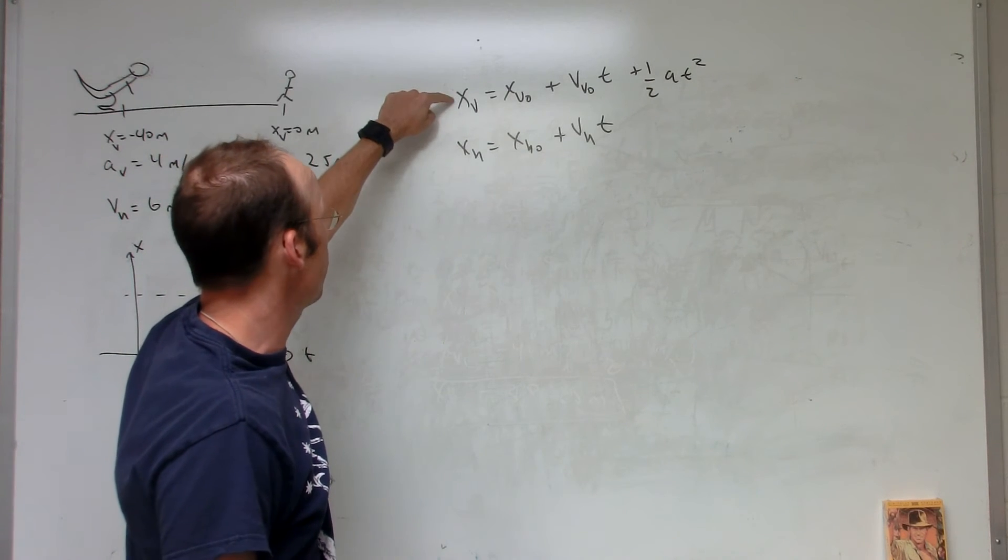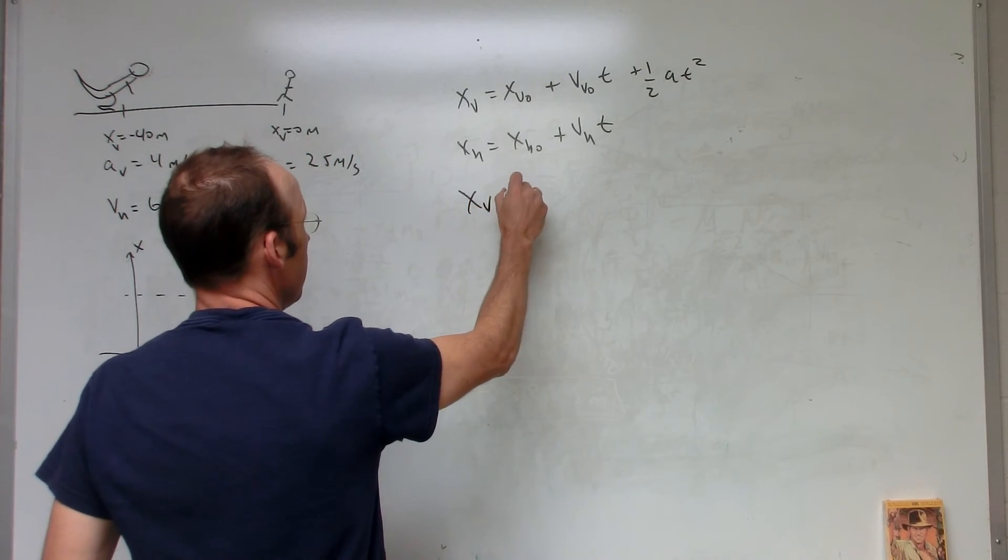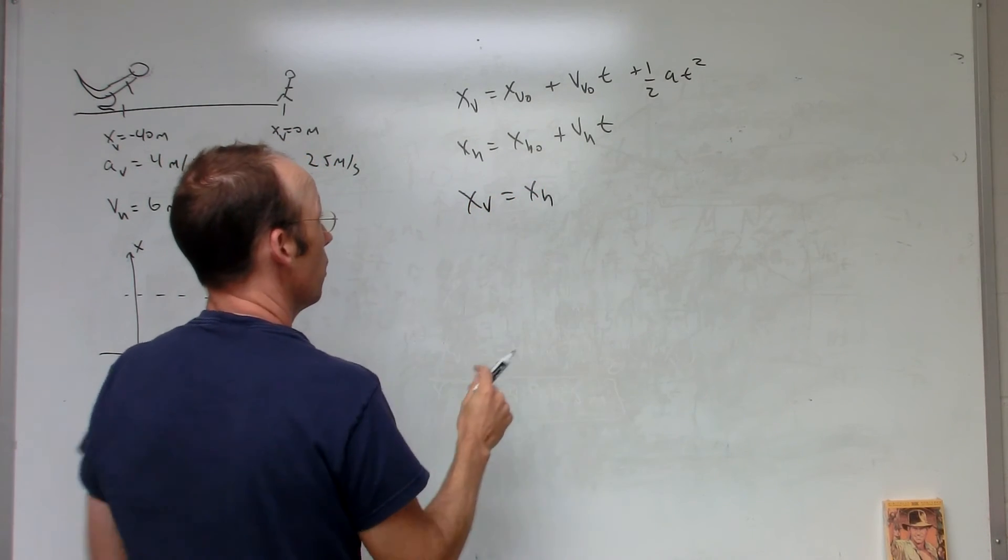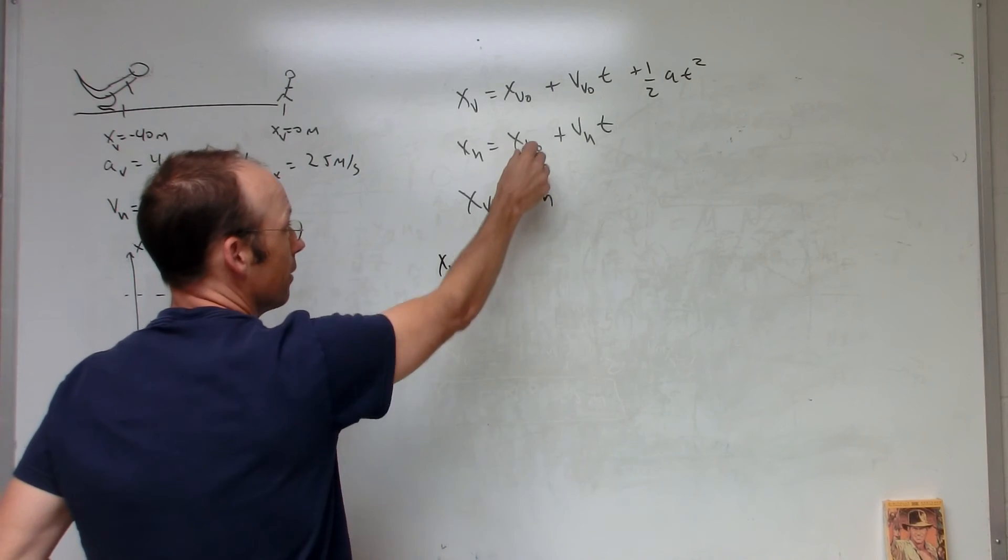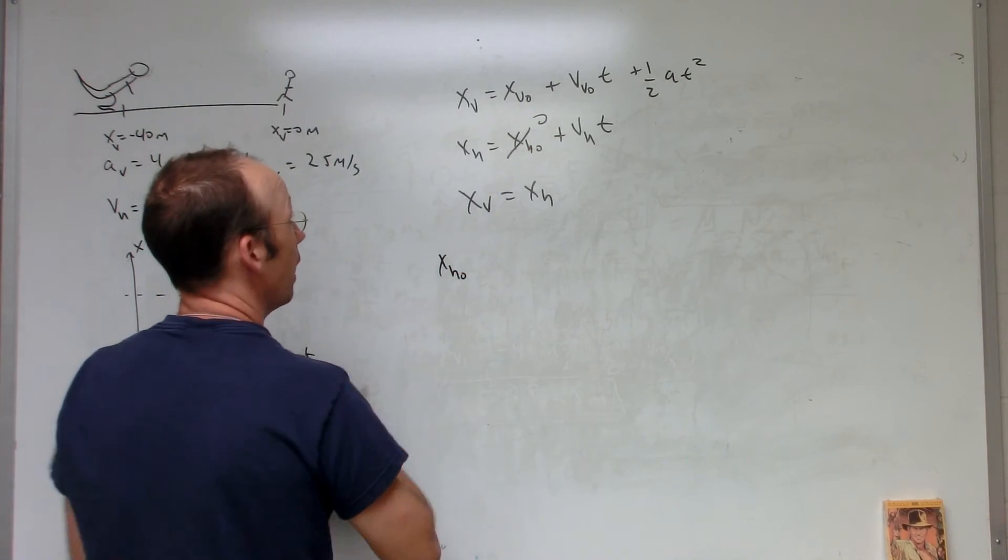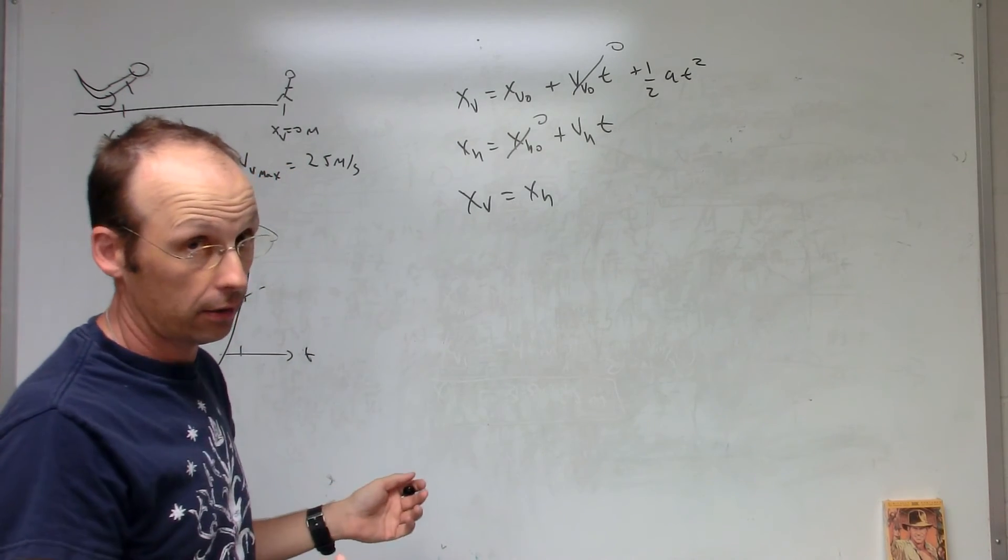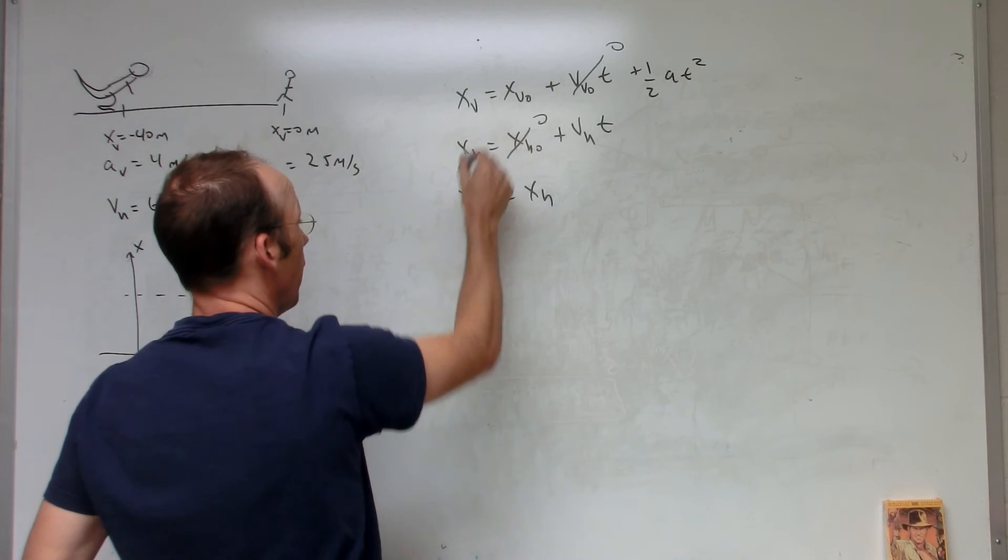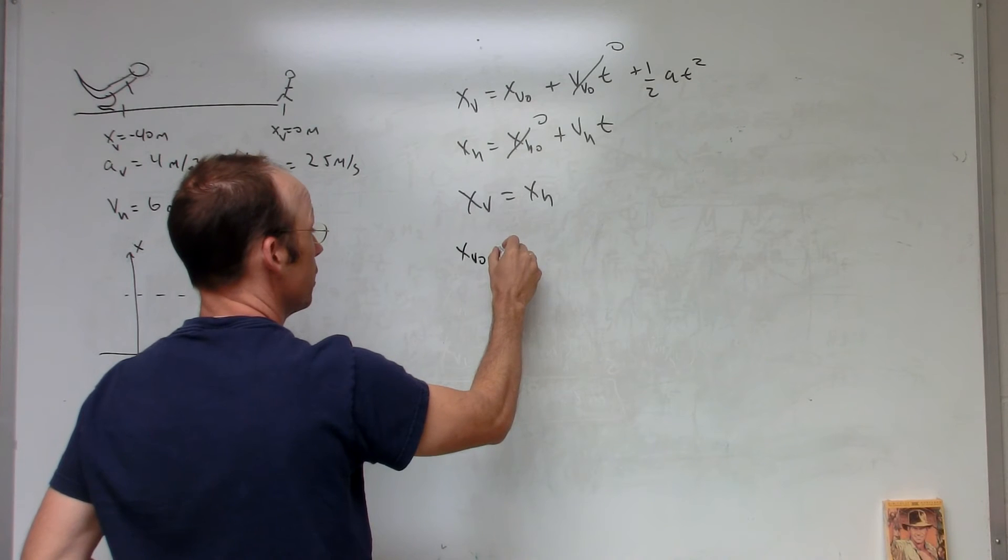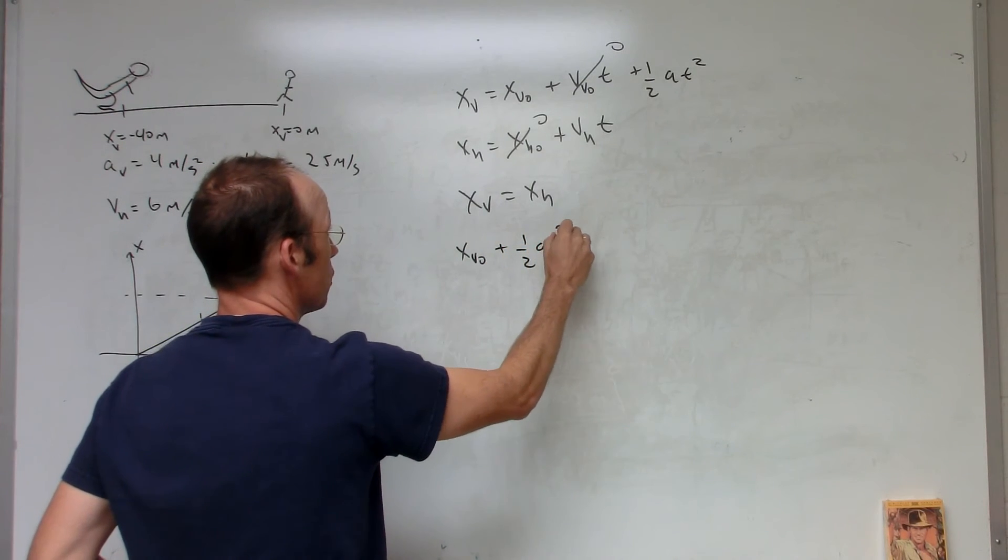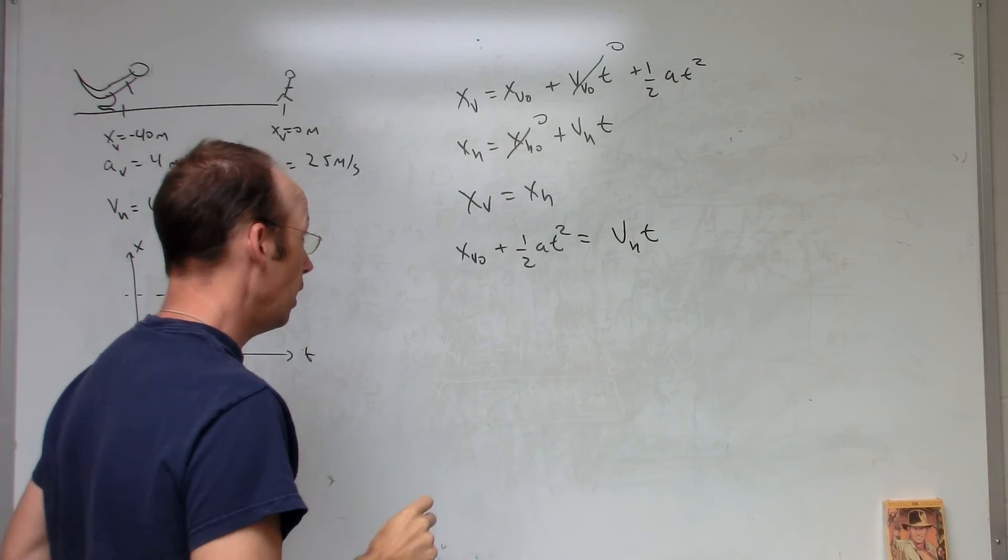I want to find out when this is equal to that. So I can just set this equal to that. So I can say XV equals XH. Well, that means I can set this stuff equal to that stuff. X human zero is zero, I'm going to leave that off. And this is zero. I mean, I don't want to write stuff that I don't have to write. So now I have XV zero, the initial position of the Velociraptor plus one half a T squared equals velocity of the human times T.